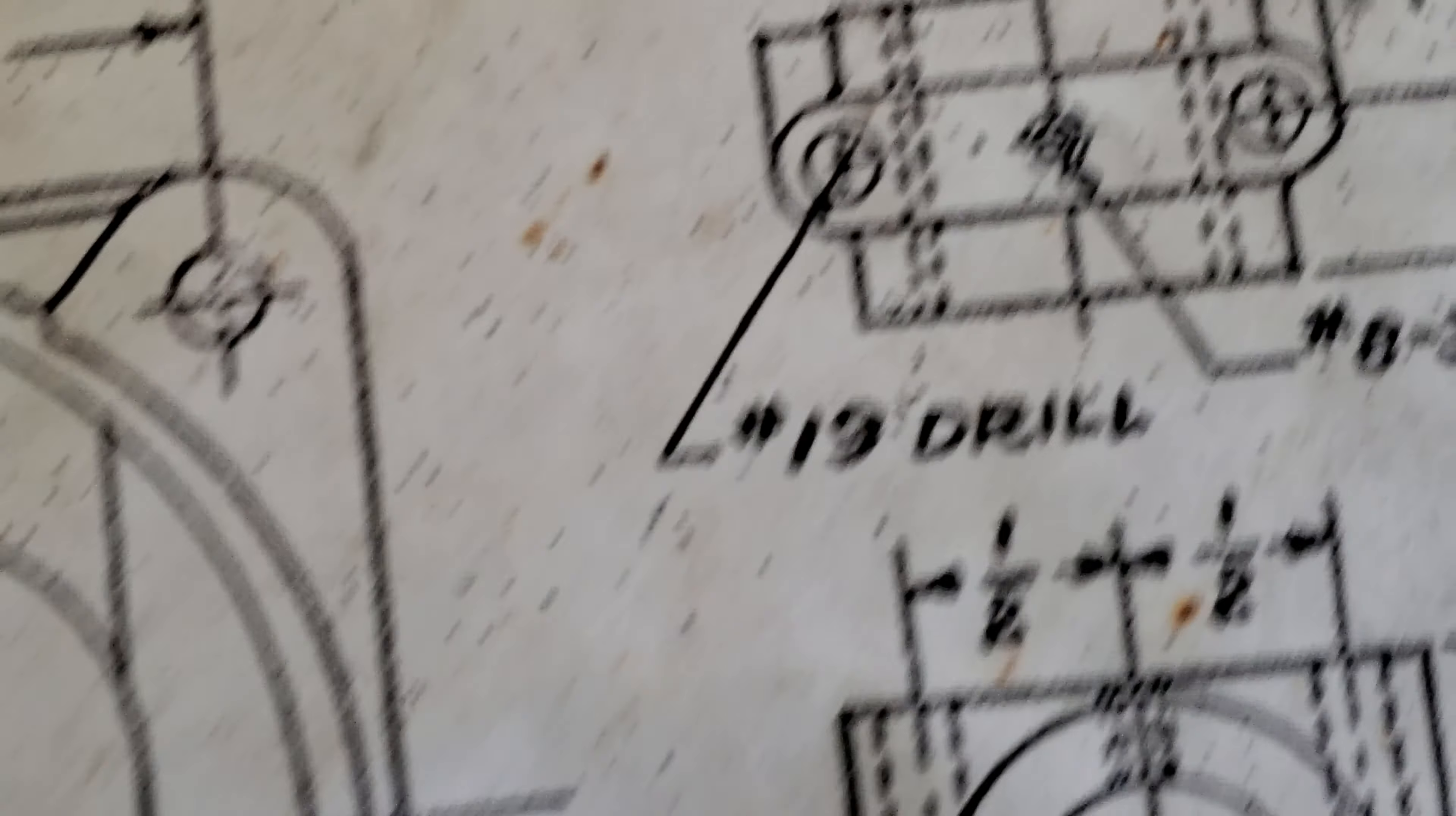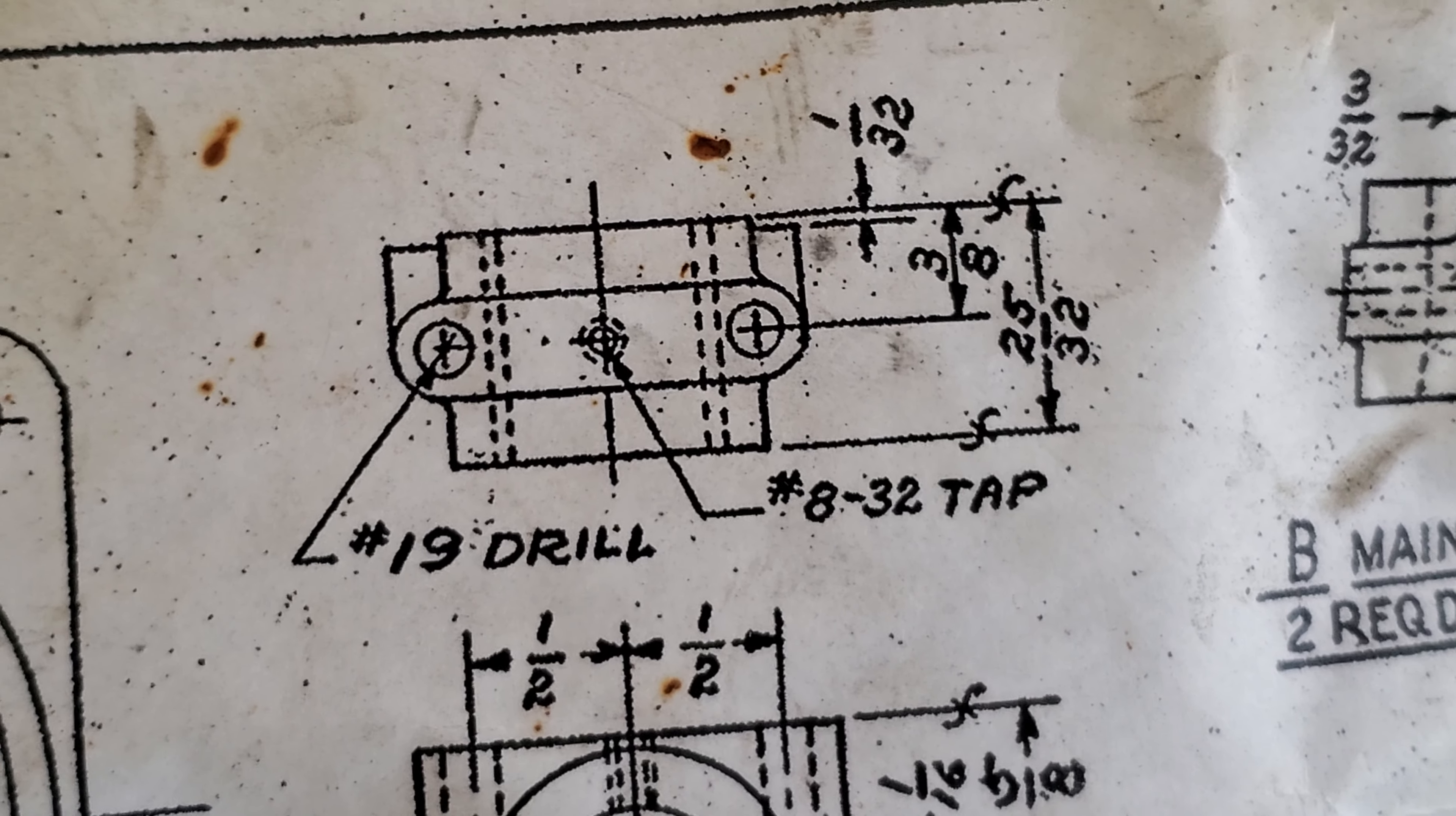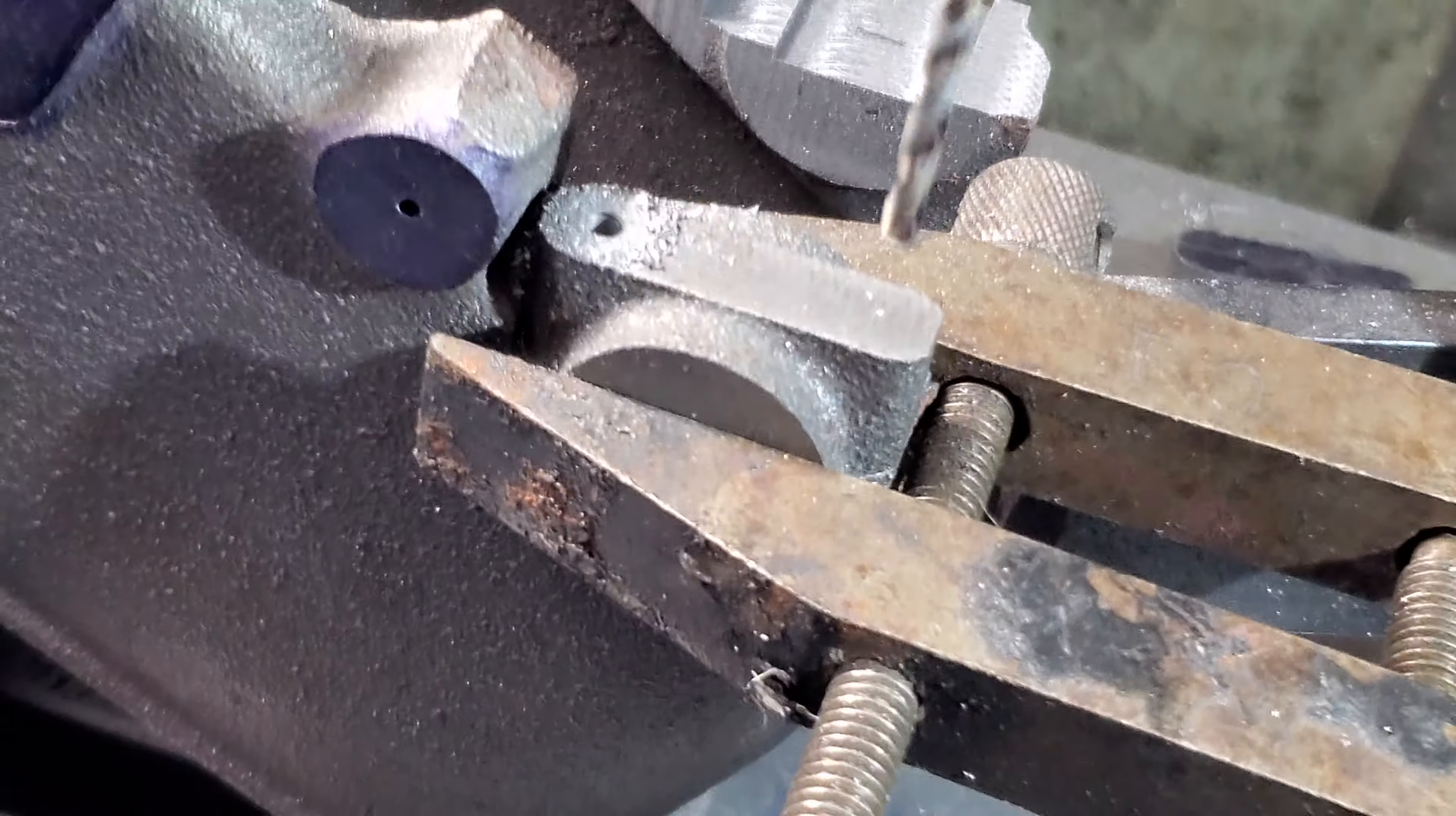Okay daughter, I'm going to drill these out right here, half inch apart. Got one of those holes, number 19 drill, it's going to be for 8-32 tap, and I've got one drilled. There's 500, that's the other half. Here we are here.